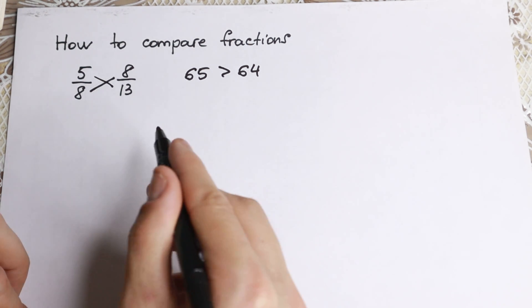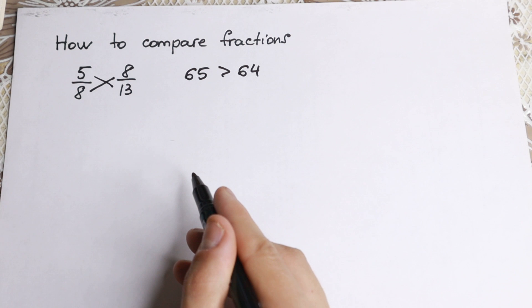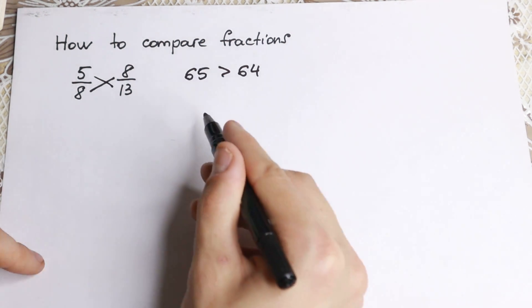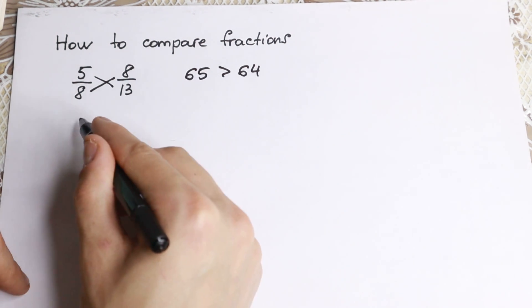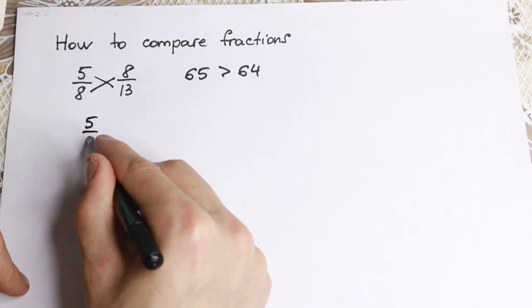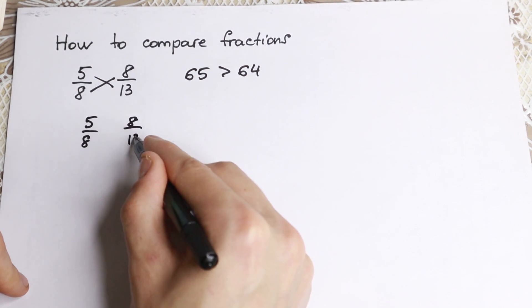But how can we prove this method? Is this method correct or not correct? Why is this method correct? Take a look closely. We have 5/8 on the left-hand side and 8/13 on the right-hand side.